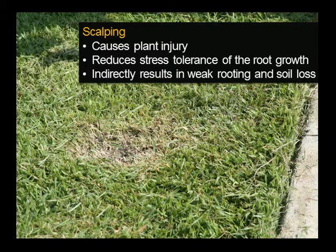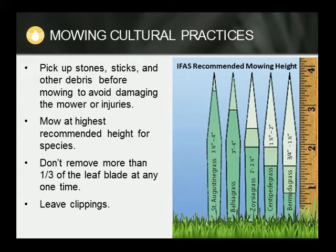Turfgrass undergoes physiological stress with each mowing event, particularly if too much leaf tissue is removed. Effects of scalping or removal of too much shoot tissue at one time can produce long-term damage to the turf. This can leave turf susceptible to other stresses such as insects, disease, drought, and sun scald. Mowing cultural practices begin with picking up stones, sticks, and other debris before mowing to avoid damaging the mower or potentially causing injuries. As a rule of thumb, mowing should be performed often enough so that no more than one third of the leaf blade is removed at any one mowing.